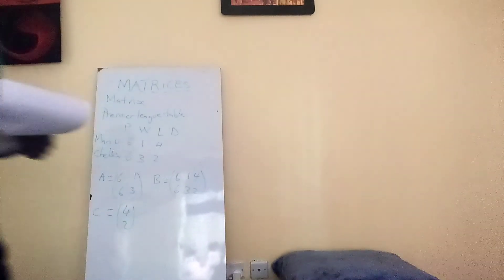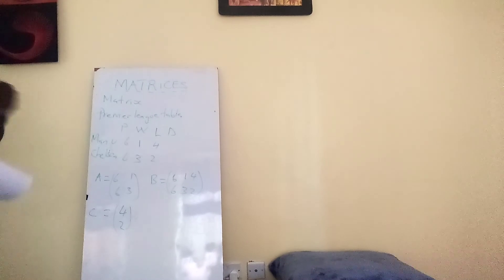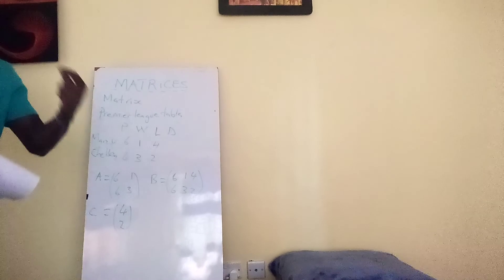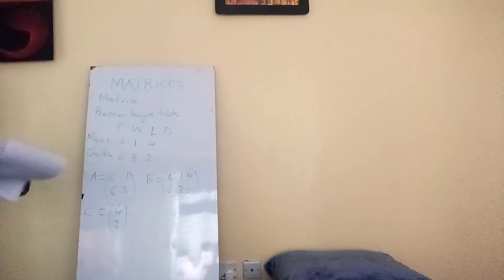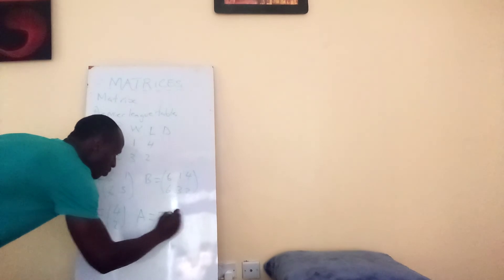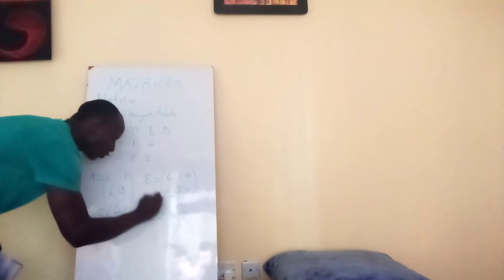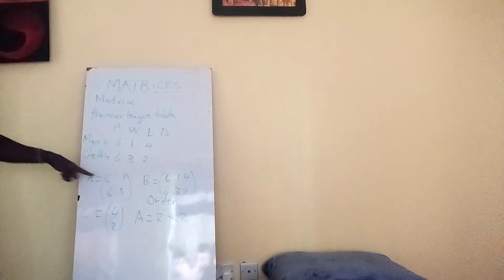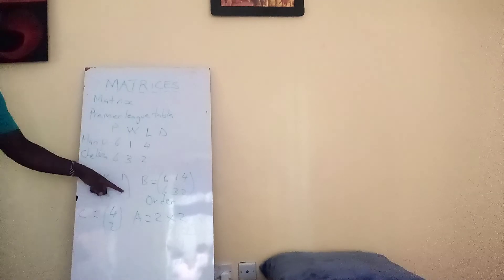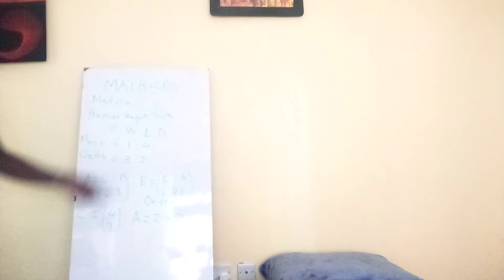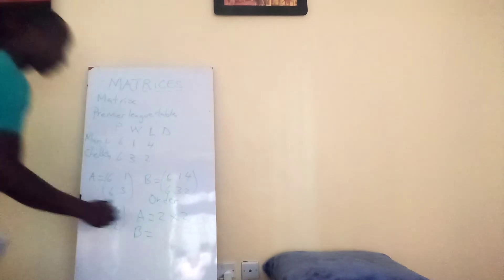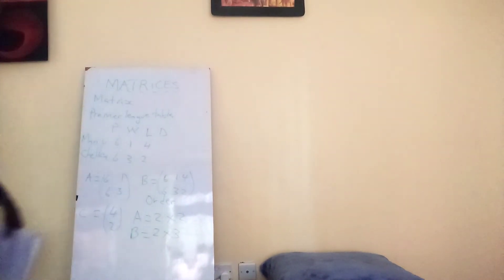Matrix can be represented by order — there's what we call the order of a matrix. The order tells you the number of rows and columns it has. Matrix A has an order of 2 by 2, meaning it has 2 rows — the top row and the lower row — and 2 columns. The order of matrix B is 2 by 3: it has 2 rows and 3 columns, where 6,6 is the first column, 1,3 is the second column, and 4,2 is the third column.